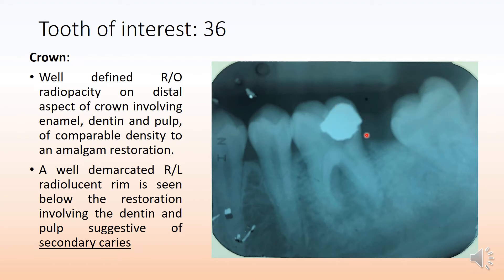There is a well-defined radiopacity on the distal aspect of the crown involving enamel, dentine, and definitely involving the pulp of the tooth, because it is a large radiopacity with density comparable to that of an amalgam restoration — it looks very dense and has to be an amalgam. You also see a well-demarcated radiolucent rim below the restoration, indicated by the orange arrow marks, involving the dentine as well as the pulp, which is suggestive of secondary caries involving the pulp.